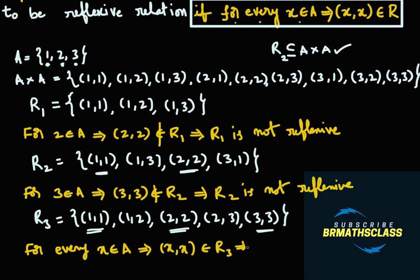That is why we say R3 is a reflexive relation. The important thing is: for every element in set A, for every x in set A, ordered pair (x, x) must be there in the relation — then we say that relation is a reflexive relation. I hope you understood this class. If you like this video, please share it with your friends and subscribe to my YouTube channel to get more updates. Thank you.